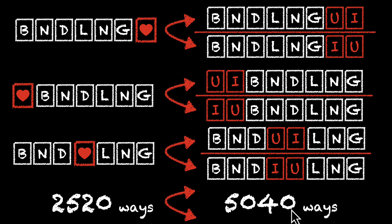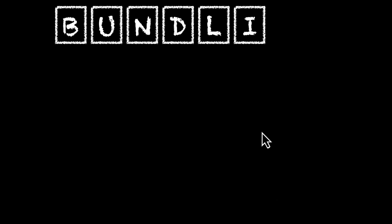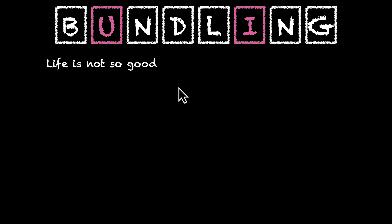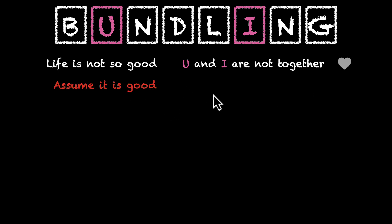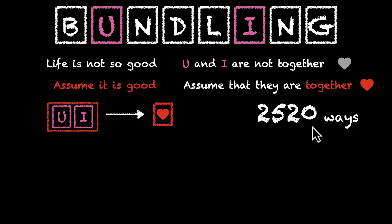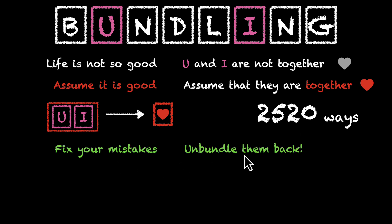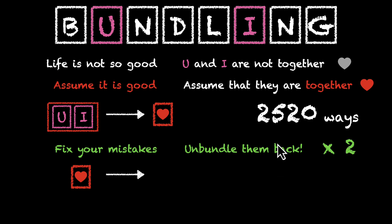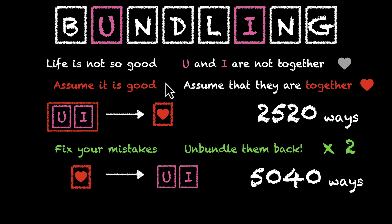And this is our final answer — 5,040. This is the total number of ways to rearrange the letters of the word bundling such that both vowels are always together. Let's summarize: we had these letters and we wanted U and I to be together. U and I were not together, so we assumed that they are — we bundled U and I and formed a new letter, and we got to 2,520. But then we had to fix our mistakes by unbundling them back. When we opened this heart, U and I could switch places, and every single arrangement gave us two unique words, which means we got 5,040 ways.